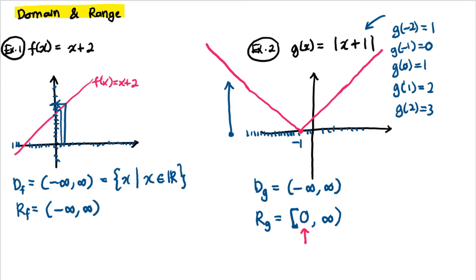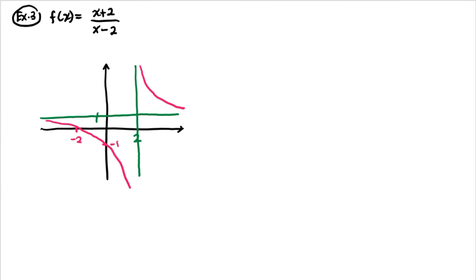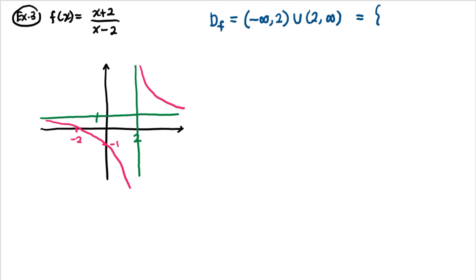Now suppose we have a rational function. If we substitute x = 2, the denominator becomes 2 - 2 = 0, making the function undefined. Therefore the domain is any value except 2: from negative infinity to 2, union with 2 to infinity — or written as {x ∈ ℝ : x ≠ 2}.